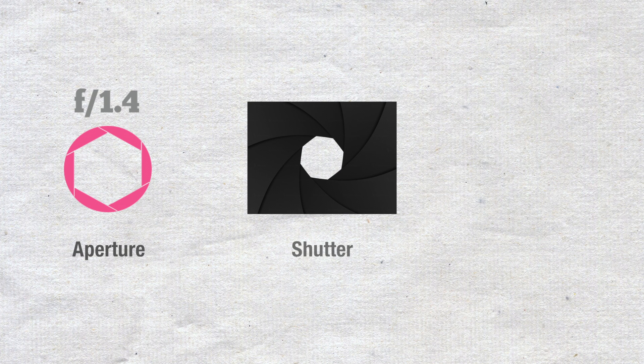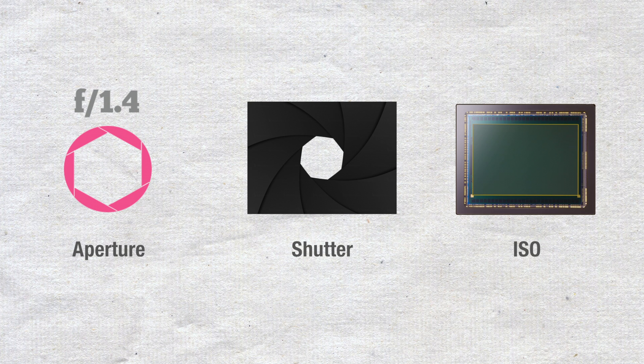We already know how each variable affects exposure differently, with aperture controlling the area through which light can enter your camera, shutter speed controlling the duration of the exposure, and ISO controlling the digital sensor's sensitivity to light.